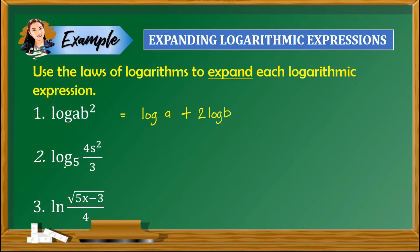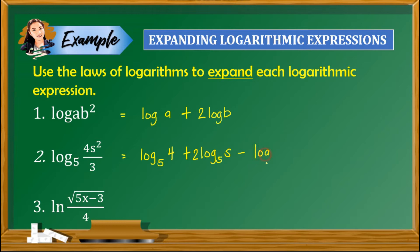Second example: logarithm of 4s squared over 3 with base 5. In the numerator we have a product of 4 and s squared, so we apply the law of a product. For s squared, to remove the exponent, apply the law of a power. For the denominator, we apply the law of quotient, which makes it minus. So the answer is logarithm of 4 with base 5, plus 2 times logarithm of s with base 5, minus logarithm of 3 with base 5.